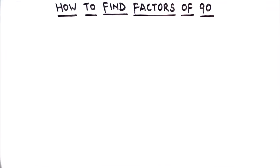Hello students, in this video we are going to learn how to find factors of 90 using prime factorization method. We can find factors of any number using multiplication or division method. Here we are going to use the division method.